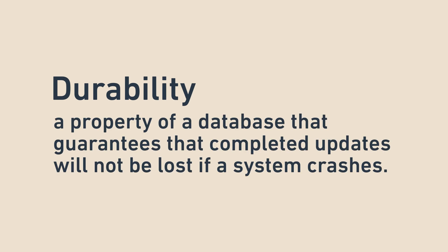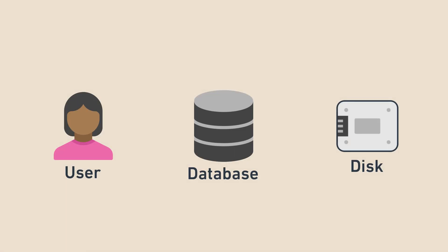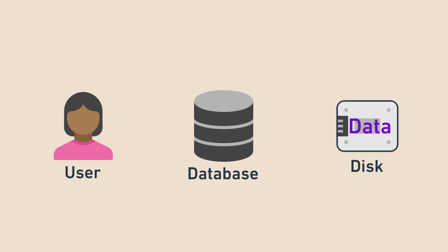Durability is a property of a database that guarantees that completed updates will not be lost if a system crashes. In general, when you ask a database to store data, they write that data to a form of persistent storage like a disk drive. It's called persistent because once the data is written, the system could crash or even suffer a power outage and the data will be safe.